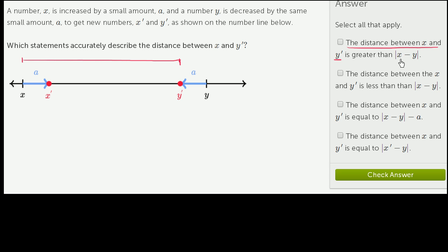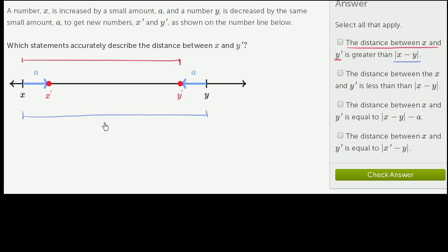Is the distance greater than the absolute value of x minus y? What is the absolute value of x minus y? You're taking x and subtracting y. Y is a larger number, so that's a negative value, but then you're taking the absolute value — you're really just finding the absolute difference between those two numbers. The absolute value of x minus y is just the distance between x and y.